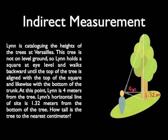Now this nearest centimeter is very interesting. What that means is it wants us to round to two decimal places because the centimeter is one one hundredth, the second decimal place, of a meter. So let's start working this problem.